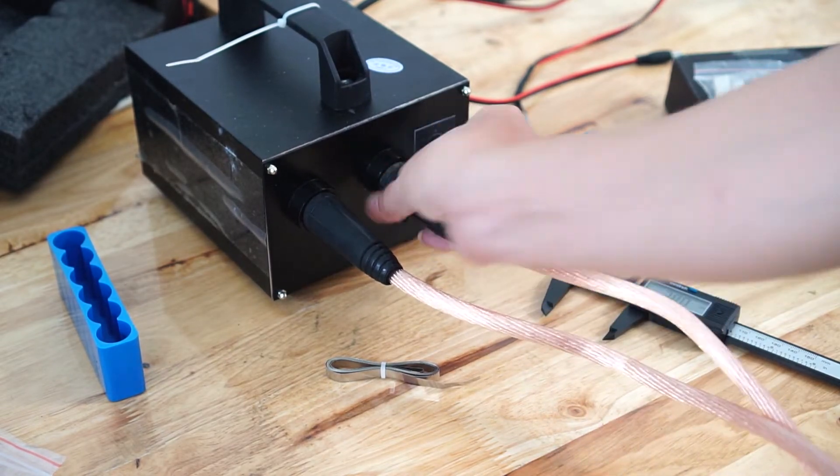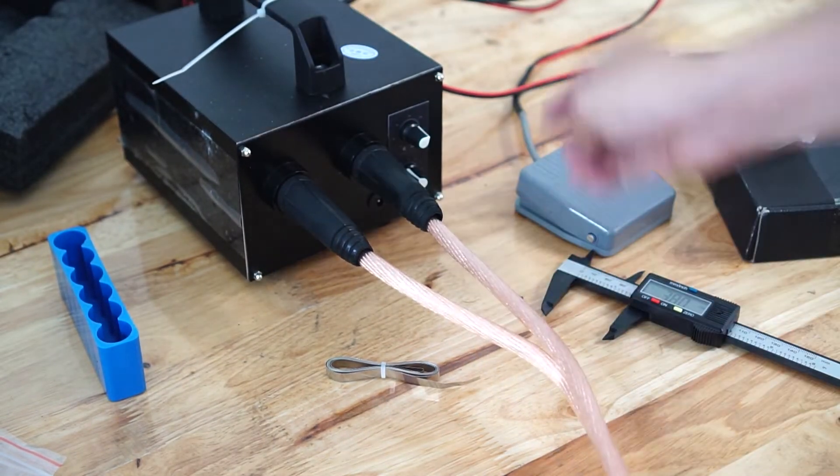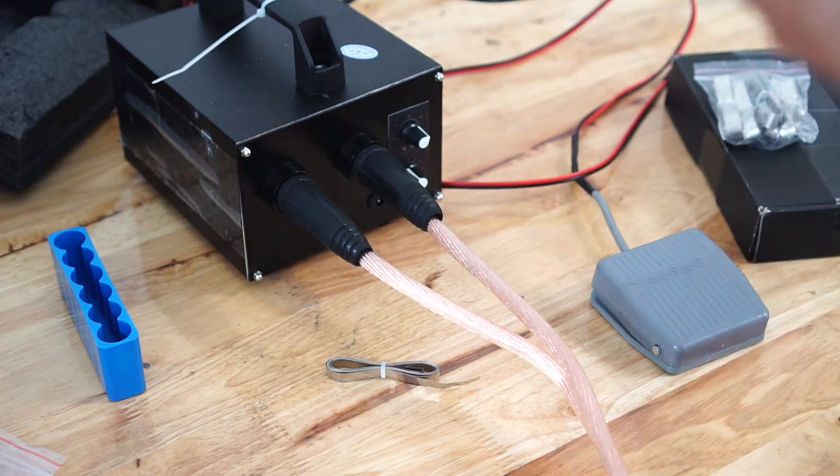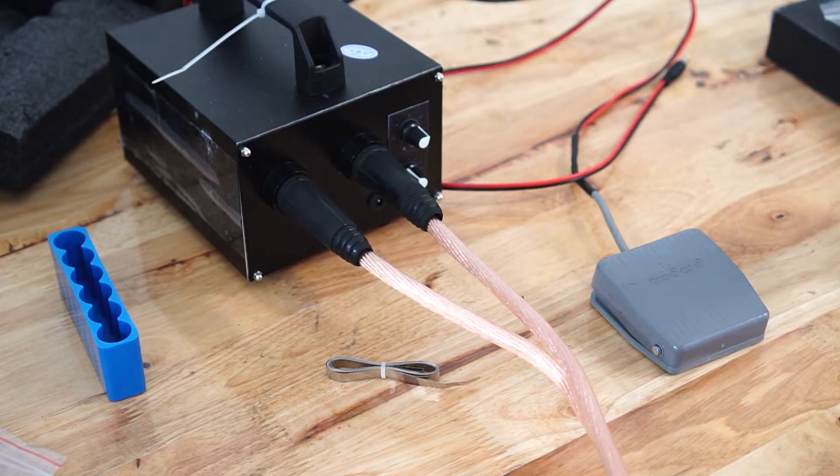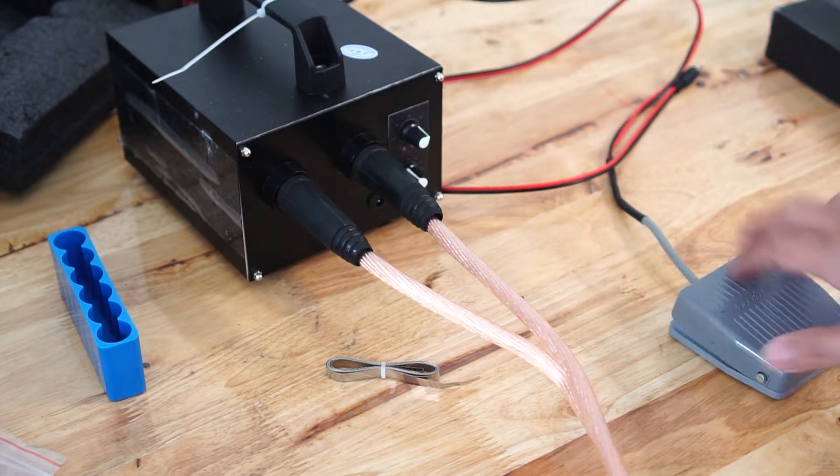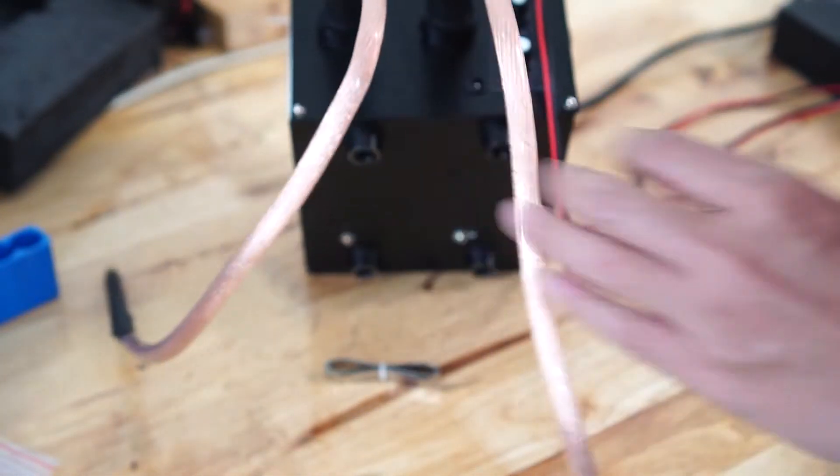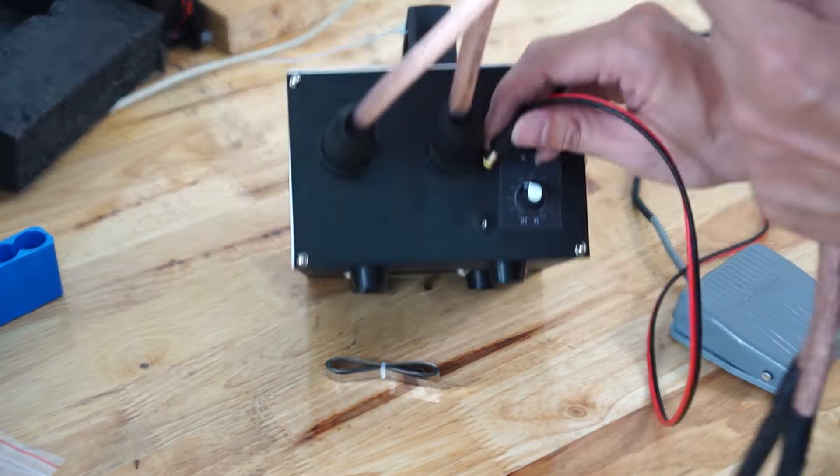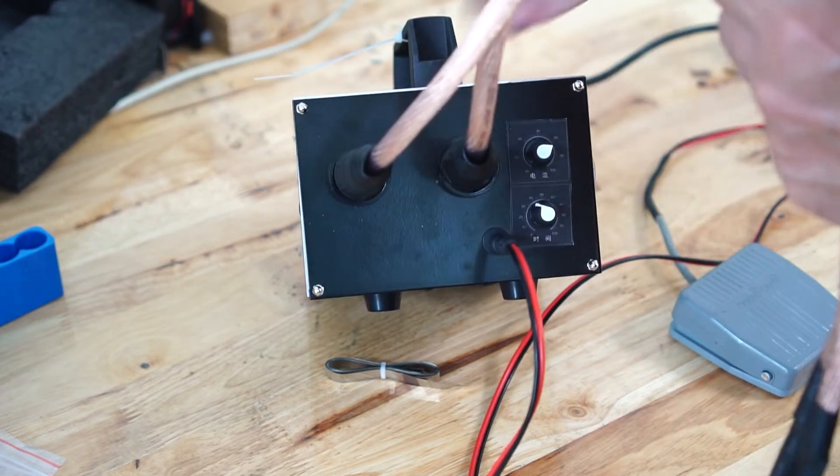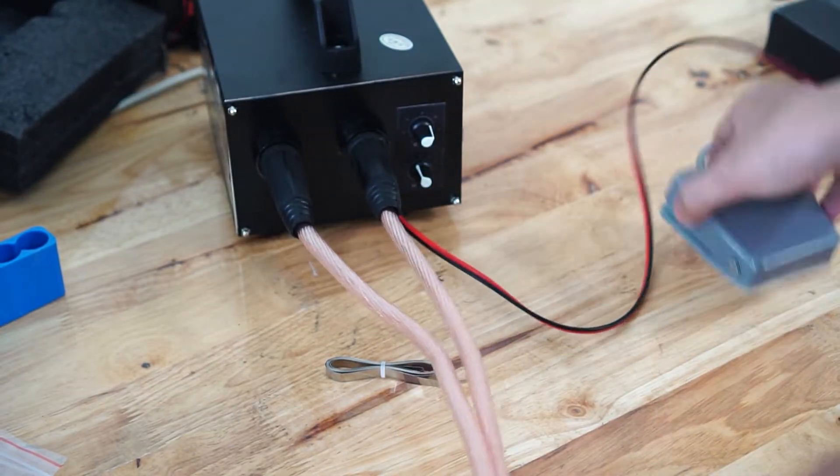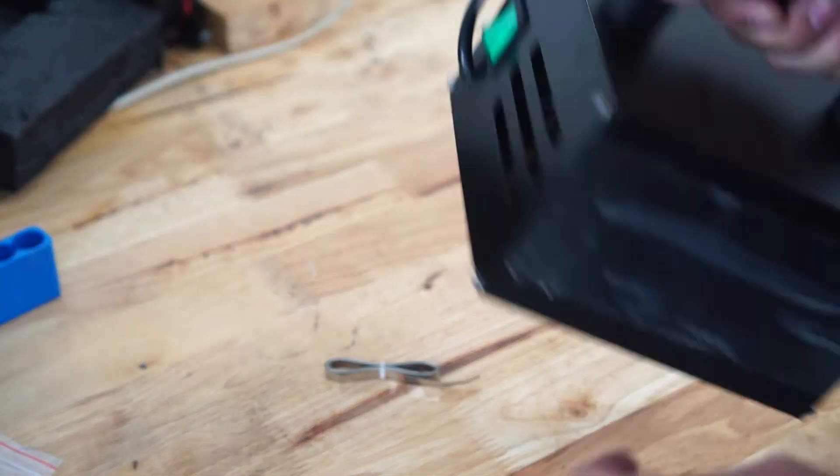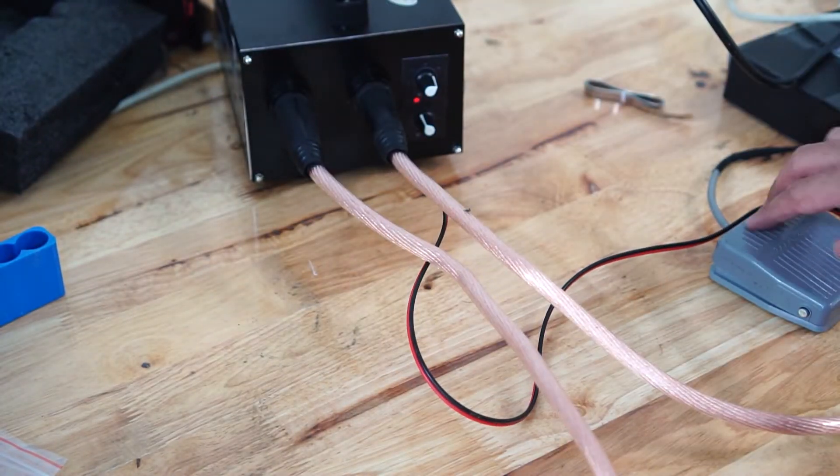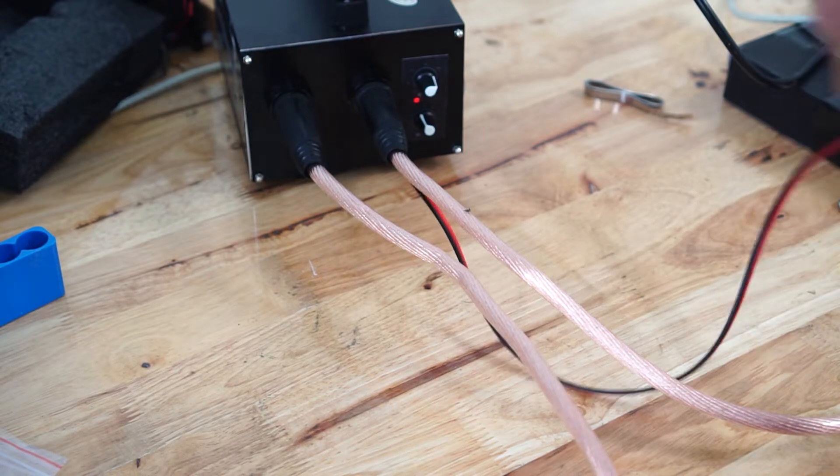Now connecting the welding wire to the foot switch plug and turn on the device. You can see the red indicator light is on. When the foot switch is pressed, it will turn green.